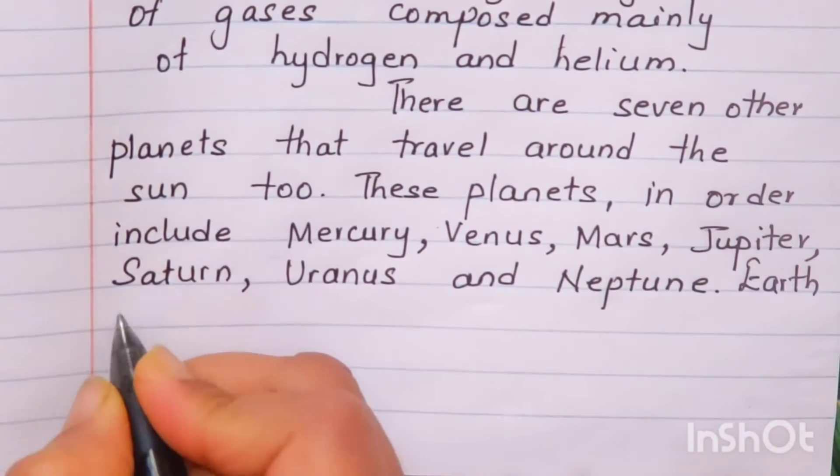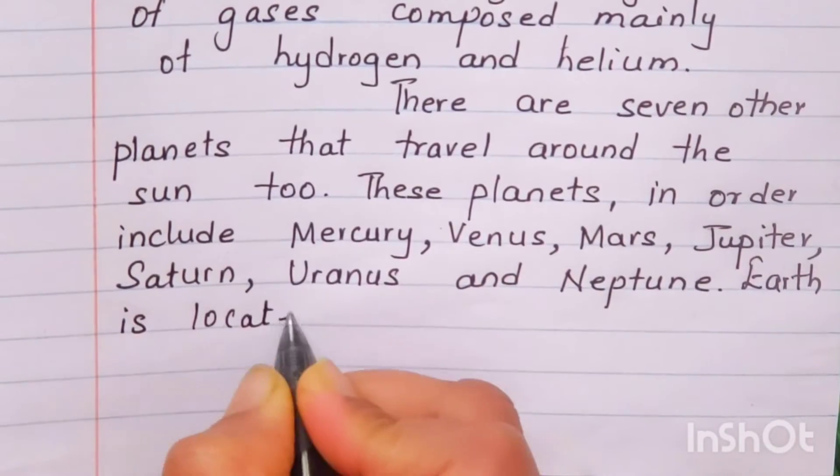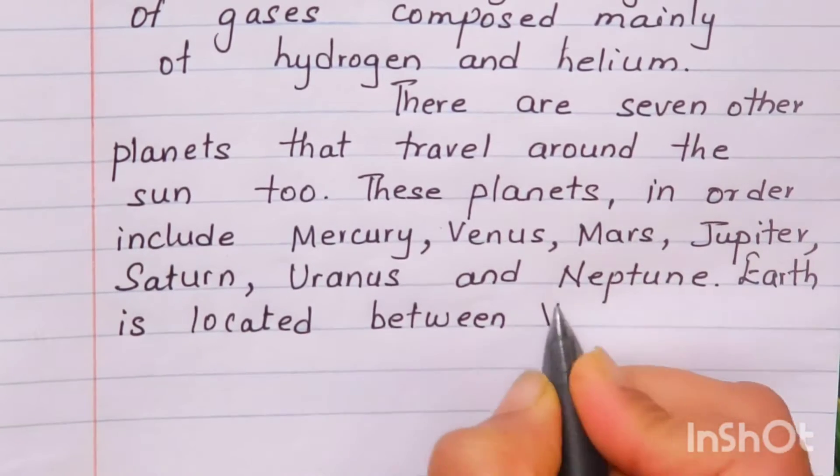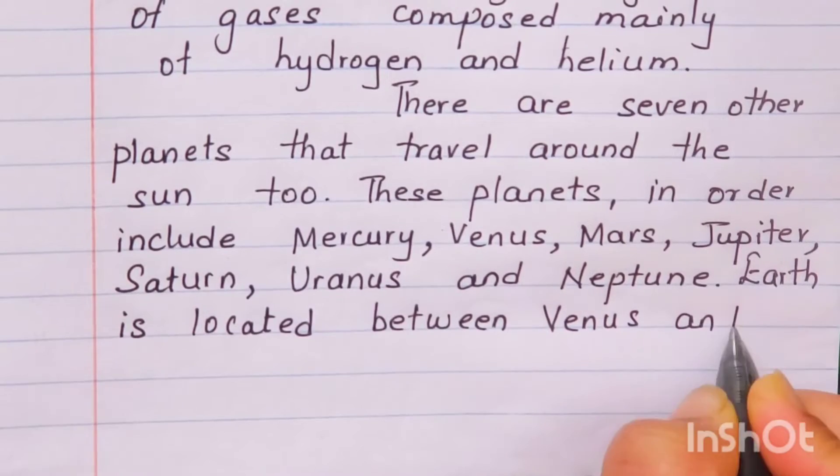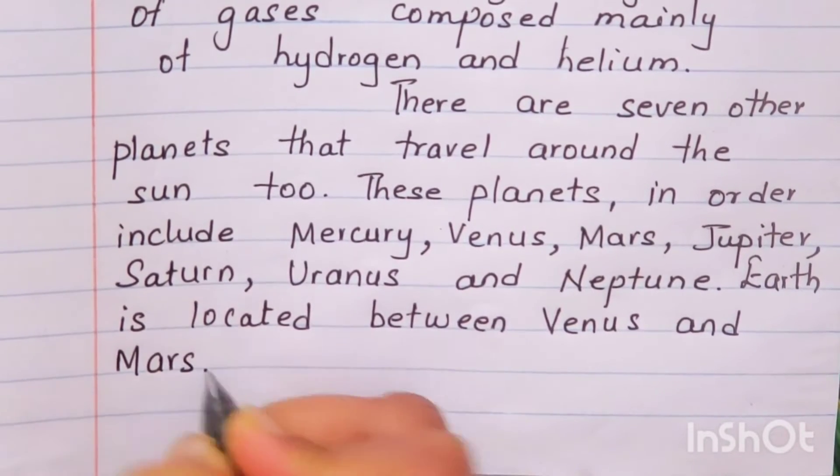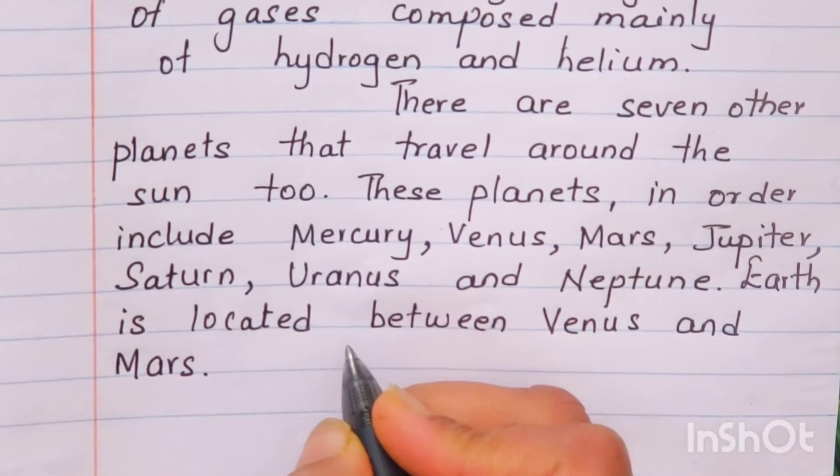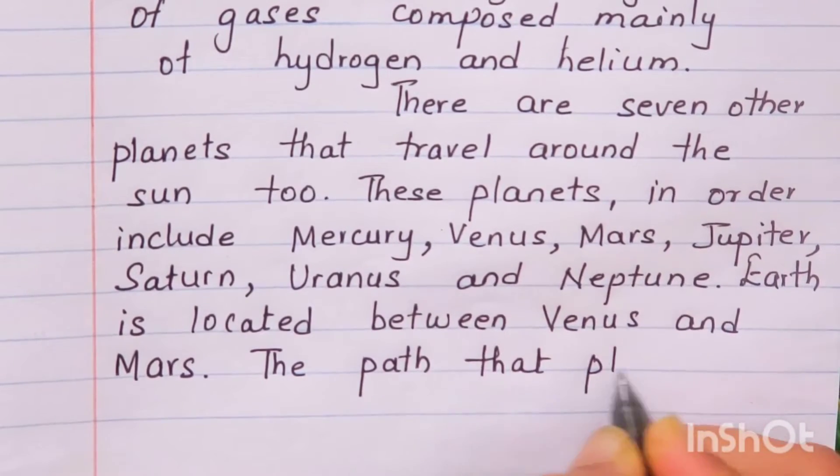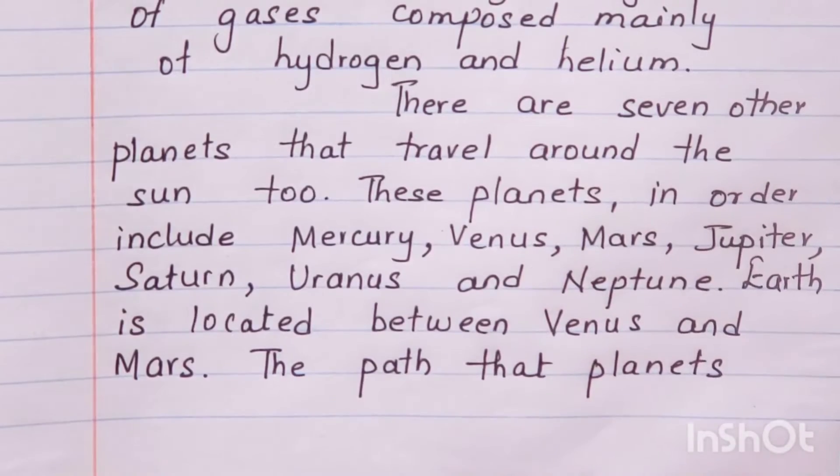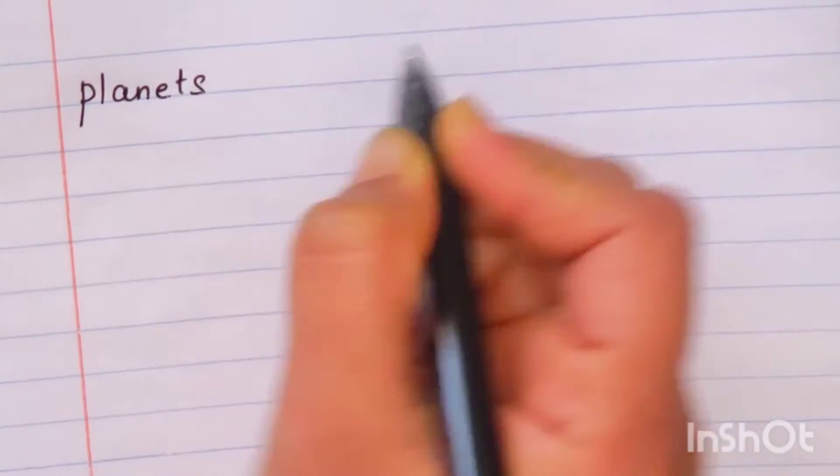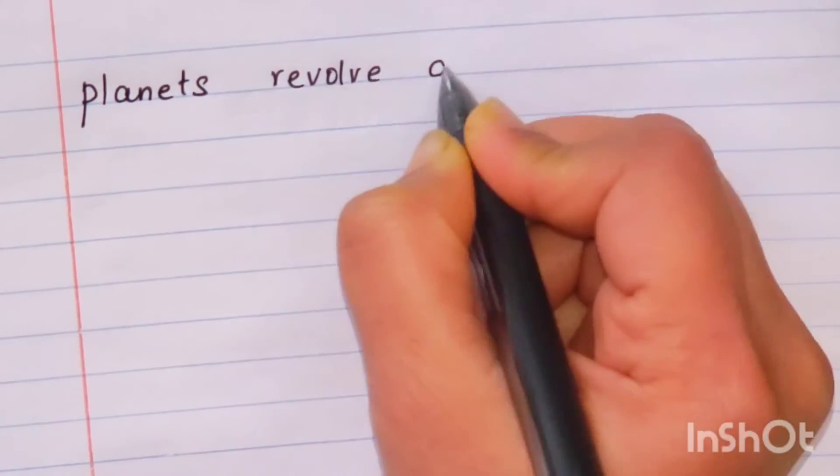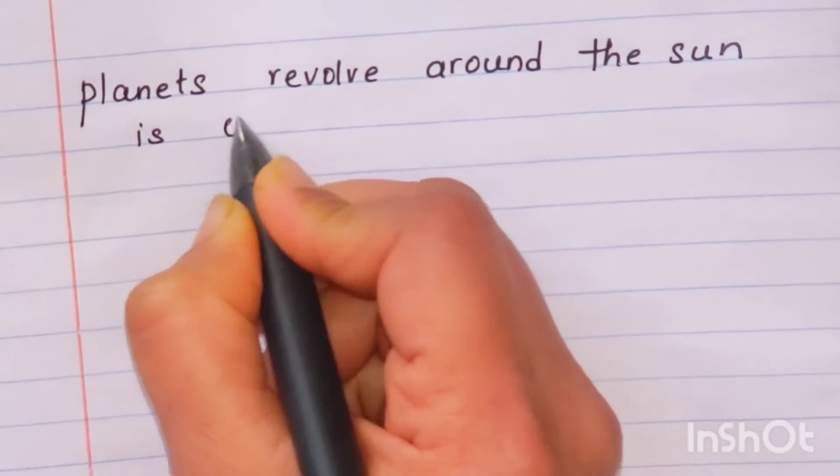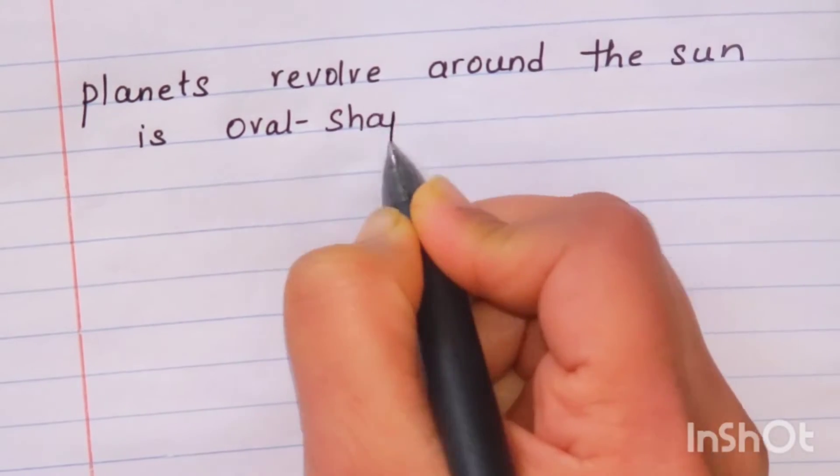Earth is located between Venus and Mars.